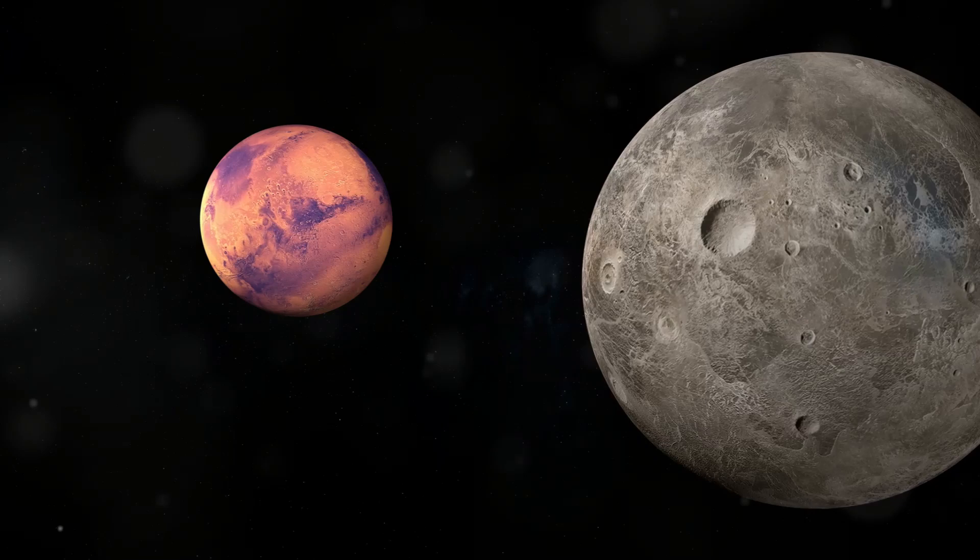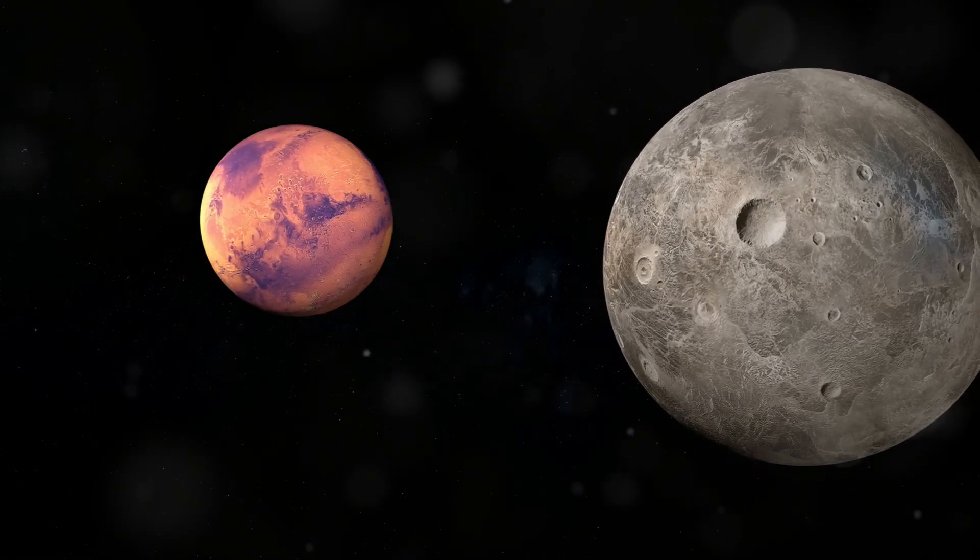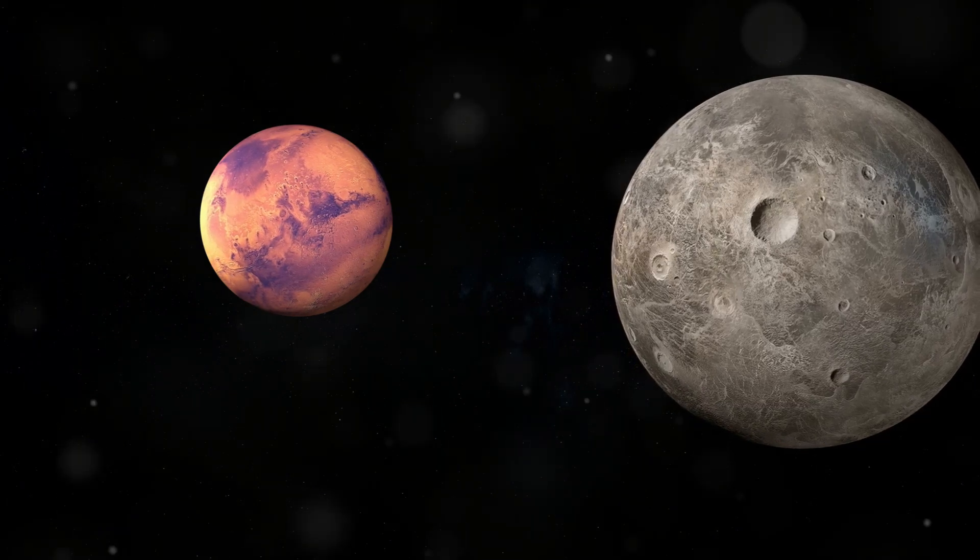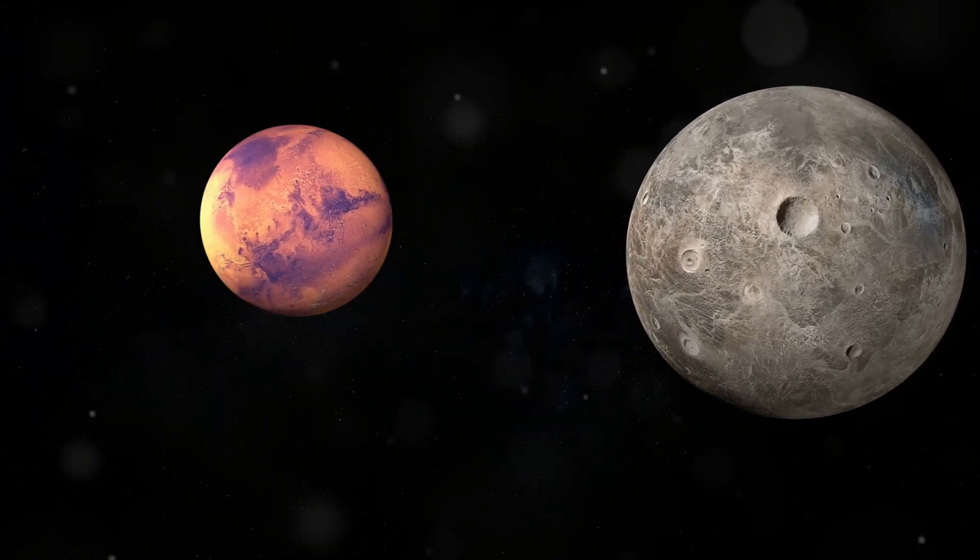Uranus: This planet is tilted on its side, which makes it look like it's rolling around the sun. This unique tilt gives Uranus extreme seasons that last over 20 years.